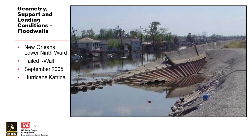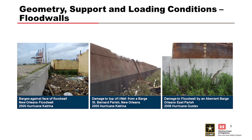One of the most infamous failures is some of the I-wall failures during Hurricane Katrina in 2005. The one in the lower ninth ward had a failed I-wall that did not overtop. Regarding barge impacts, it was estimated approximately 200 barges came loose from their moorings during Hurricane Katrina in the greater New Orleans metropolitan area, though no failures were directly attributed to barge impacts.